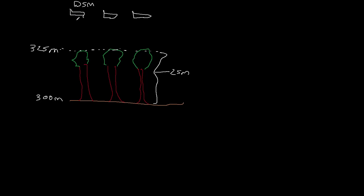What is the DSM going to return? The digital surface model is the earth plus the surface features. So it's going to grab the value 325, because it's going to come down, measure, and the pixel value is going to be the top of the tree — 325 meters. This next sensor is going to be the digital terrain model, or DTM.